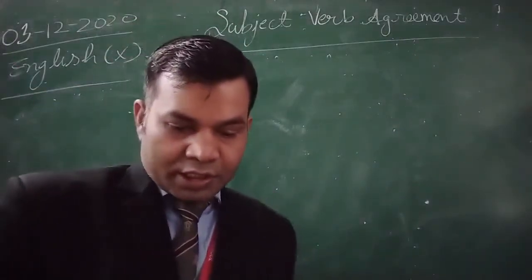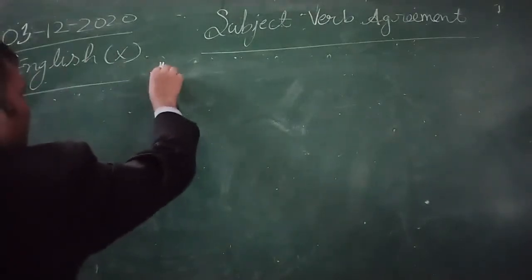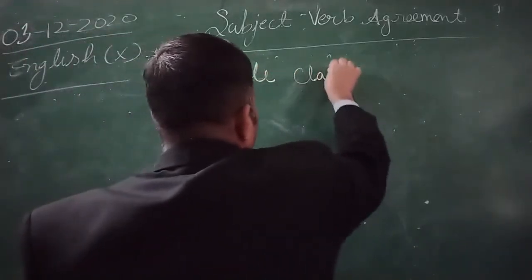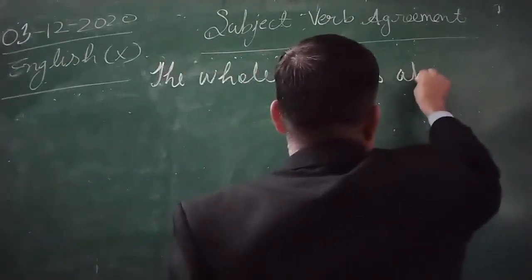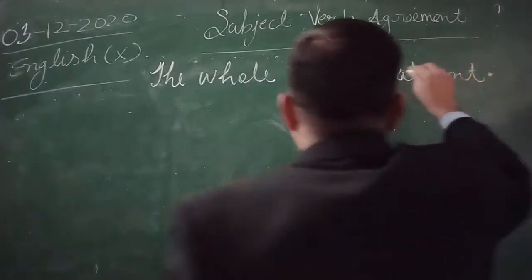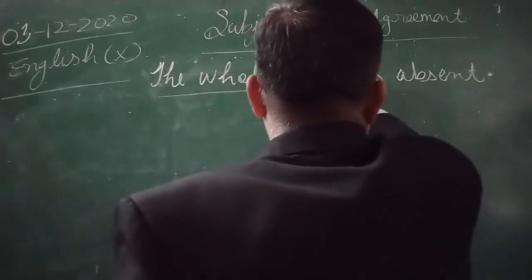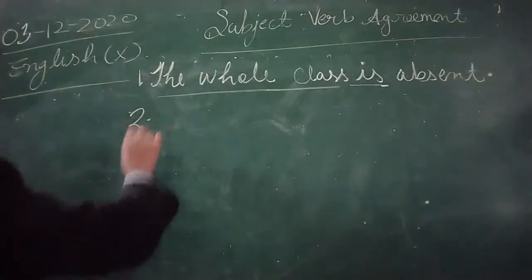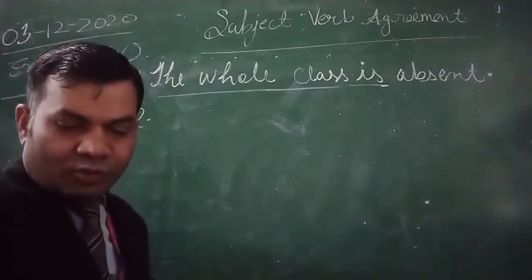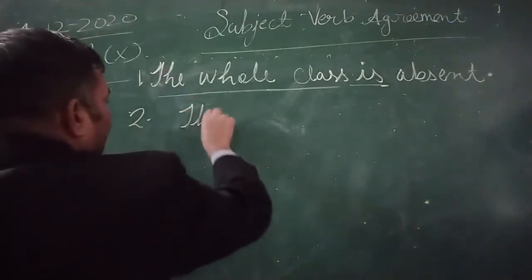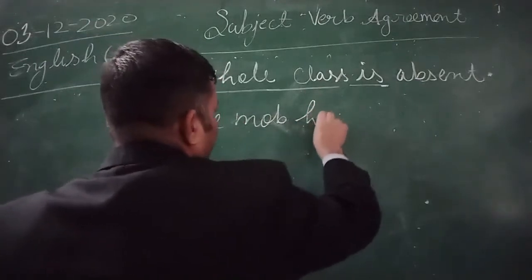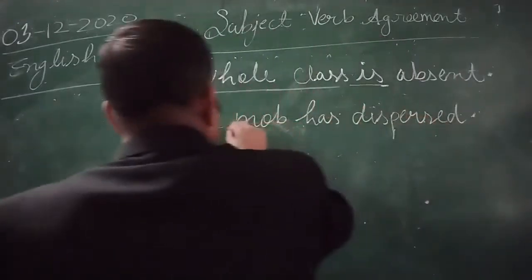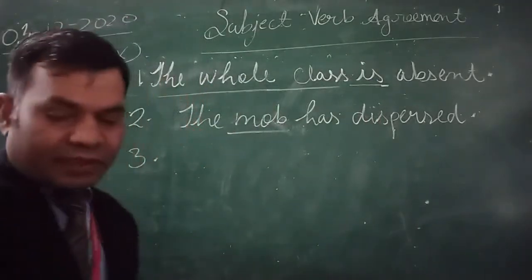The whole class is absent. Here it shows a collection — 'whole class' — that is why it is followed by a singular verb. Next example: the mob has dispersed. Mob stands for a collection, that is why it is followed by singular verb 'has'.